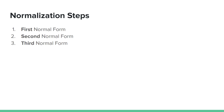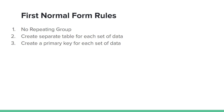If you want to use the system, you can use the normal form. You can use a new table with a primary key. Repeat groups should be addressed.